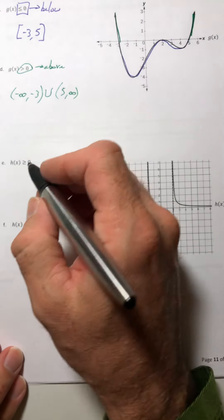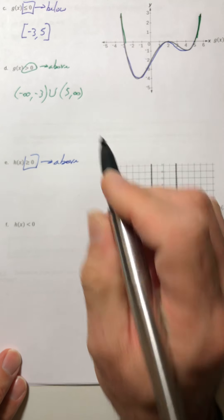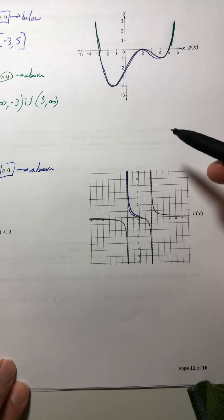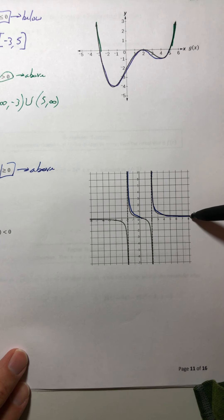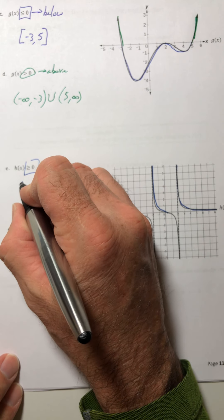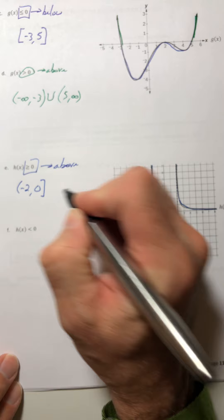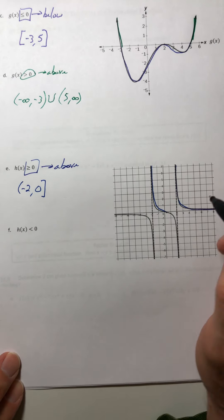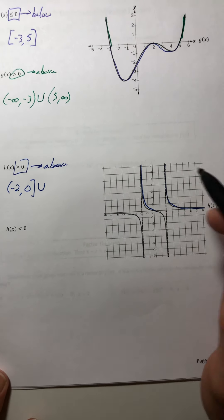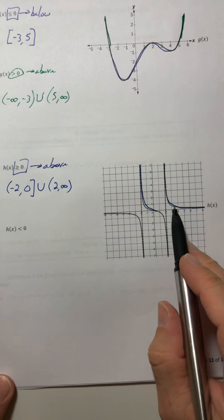All right, part h, greater than or equal to zero. That's where it's above. So what sections are above? Well, that would be that section, and this one. So from negative two to zero, and I can't include negative two, because that's my actual vertical asymptote. I can include the zero, though, because it's got the equal bar, and there's an actual point there. And then union two, a parenthesis again, because I can't include it. That's the vertical asymptote. On to infinity.